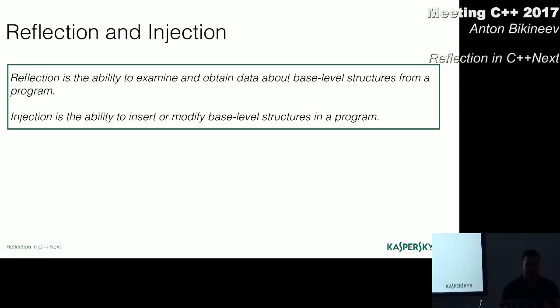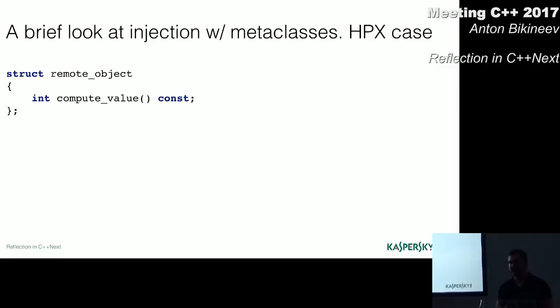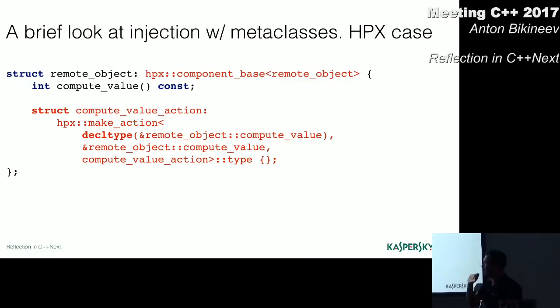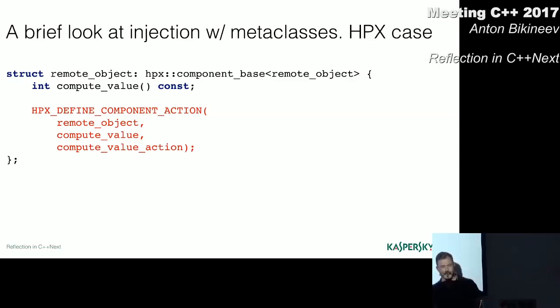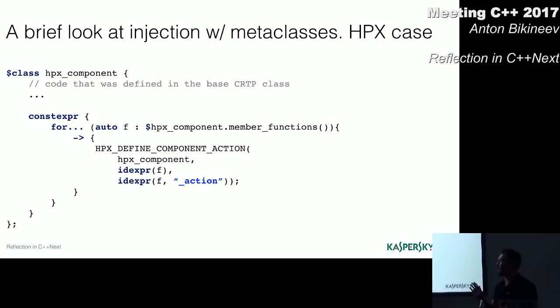For those of you who haven't watched the Herb Sutter's talk at CppCon this year, I want to show you real life example where code injection might be of great use. I worked on a library for high performance computations called HPX. It provides nice modern STL-like API for writing highly parallel applications. The library can also run on multiple machines in the cluster and has this thing called AGAS which stands for active global address space.